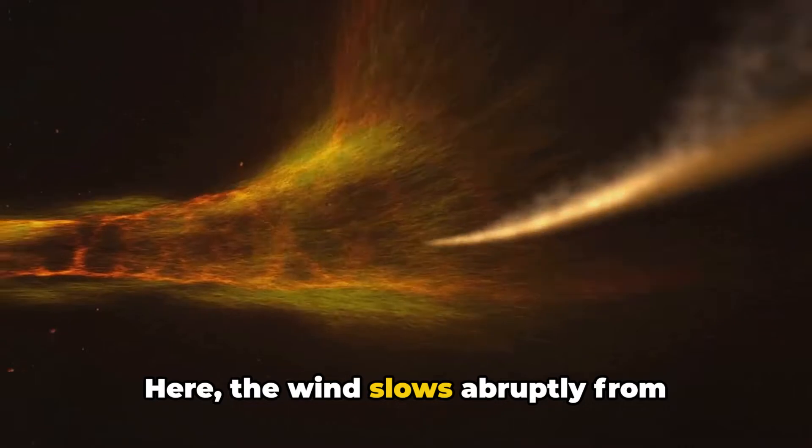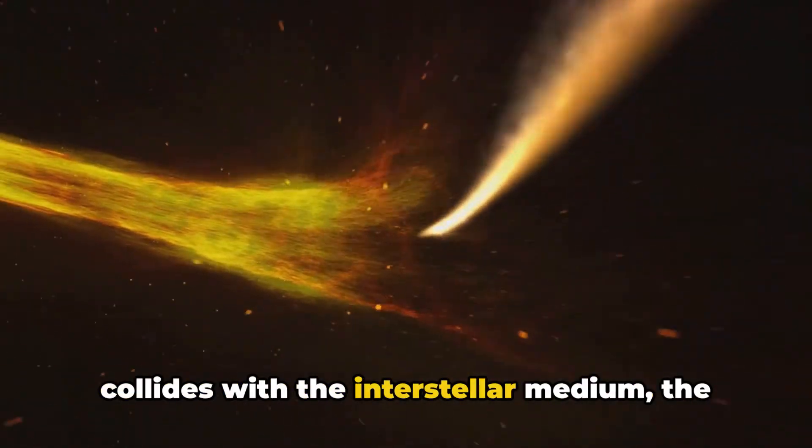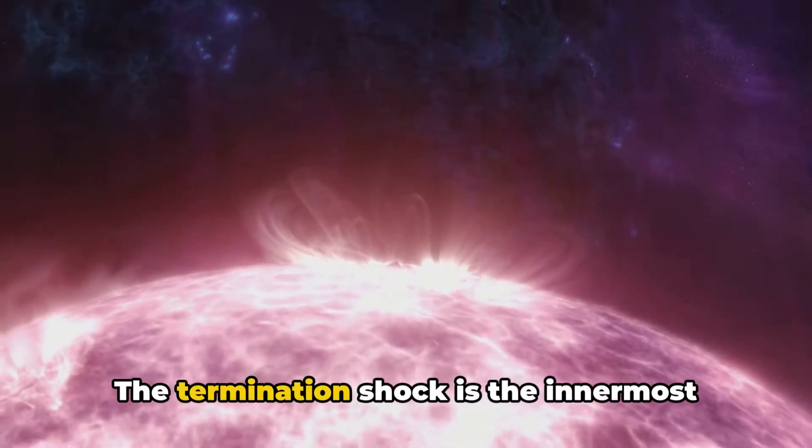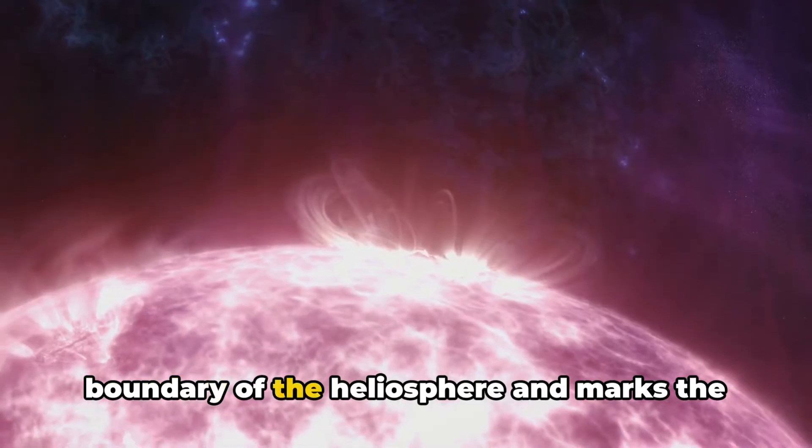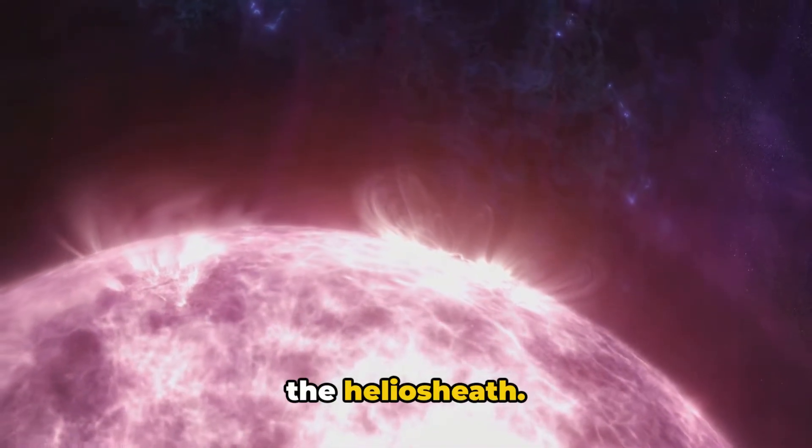Here, the wind slows abruptly from supersonic to subsonic speeds as it collides with the interstellar medium, the stuff that fills the space between stars. The termination shock is the innermost boundary of the heliosphere and marks the beginning of a turbulent region known as the heliosheath.